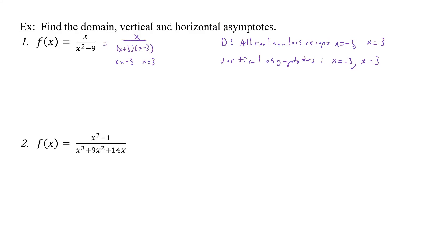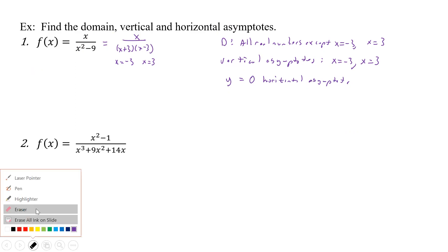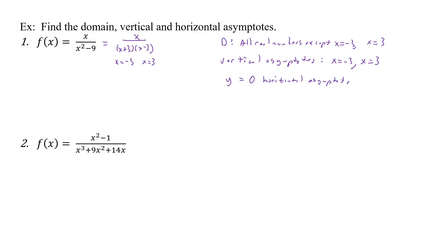Now for the horizontal asymptote, we have to look at our powers. Here we have a 1, here we have a 2. The denominator degree is greater than the numerator, which tells us we get a y equals 0 horizontal asymptote. When the denominator degree is greater than the numerator, we get y equals 0. If they're equal, we use our leading coefficients, and if the numerator is greater, we do polynomial division. So that gives us our domain, vertical, and horizontal asymptotes.